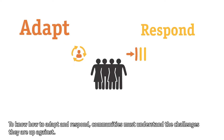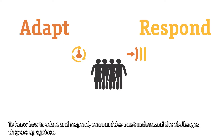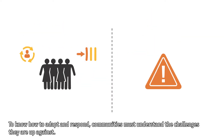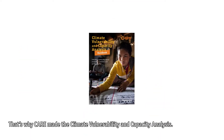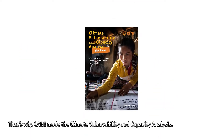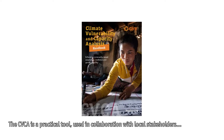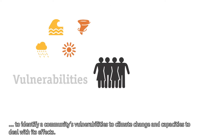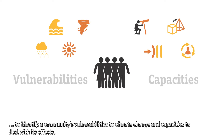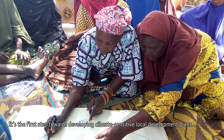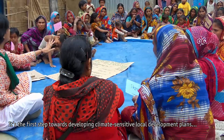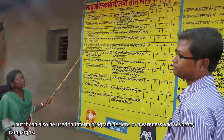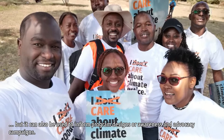To know how to adapt and respond, communities must understand the challenges they are up against. That's why CARE made the Climate Vulnerability and Capacity Analysis. The CVCA is a practical tool used in collaboration with local stakeholders to identify a community's vulnerabilities to climate change and capacities to deal with its effects. It's the first step towards developing climate-sensitive local development plans, but it can also be used to inform program designs or awareness and advocacy campaigns.